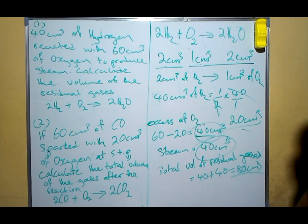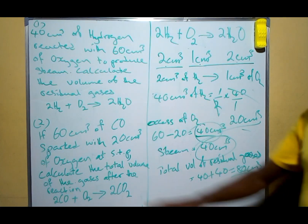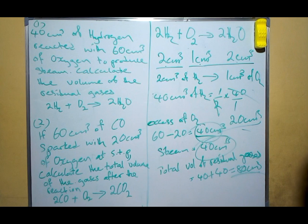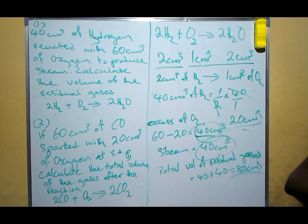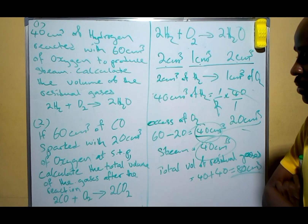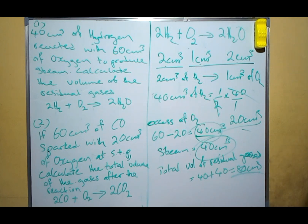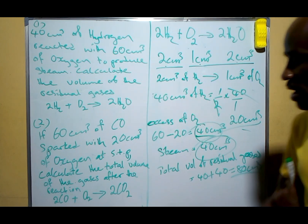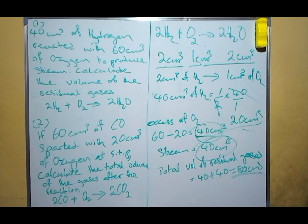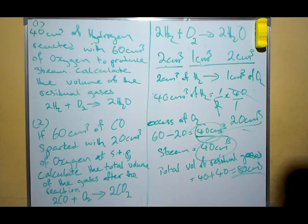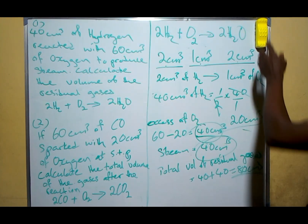Now let's try the second question. If 60 cm³ of carbon monoxide (CO) is sparked with 20 cm³ of oxygen at STP, calculate the total volume of gas after the reaction. We have a chemical equation for this.